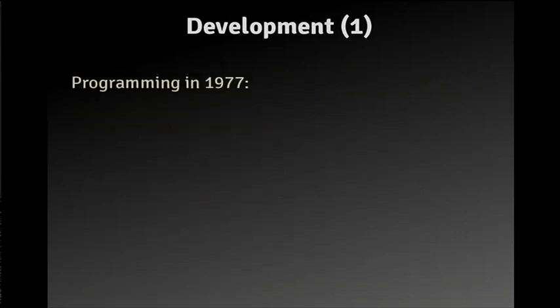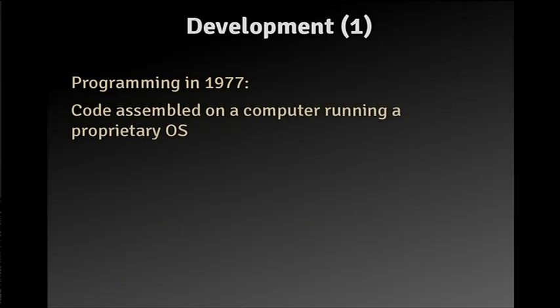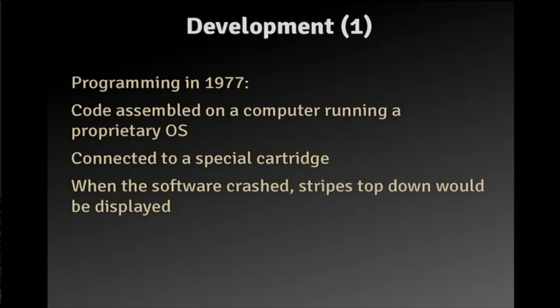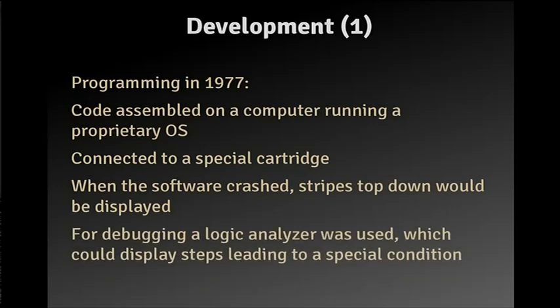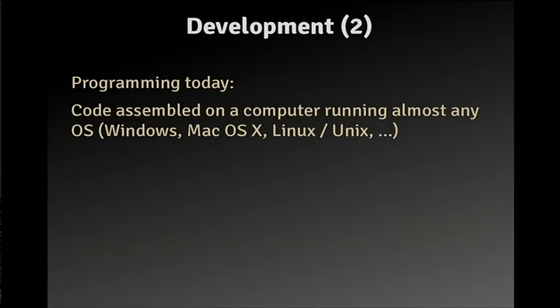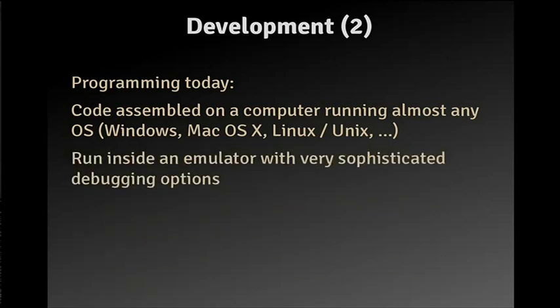So, let's take a look at how you're going to program it. Back in '77, you had code assembled on a computer running a proprietary OS — my guess was CPM but it wasn't back then. It was connected to a special cartridge which simulates the ROM inside the Atari. When the software crashed, you would just see stripes top to bottom — we'll learn why later. For debugging, a logic analyzer was used. Nowadays it's much simpler: you've got your code assembled on almost any operating system, and you can run your code inside an emulator with very sophisticated debugging options.